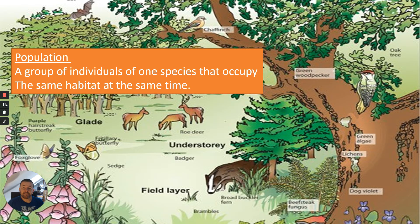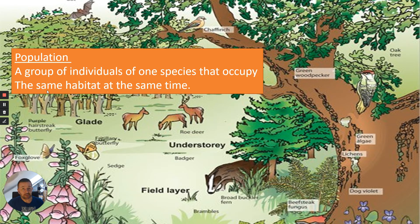First keyword: population. A population is a group of individuals of one species that occupy the same habitat at the same time. For example, roe deer — they're a group of individuals of one species, and they therefore occupy the same habitat in the glade of this woodland.